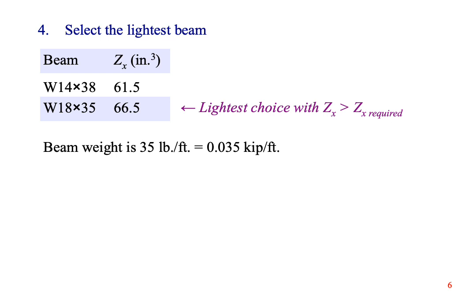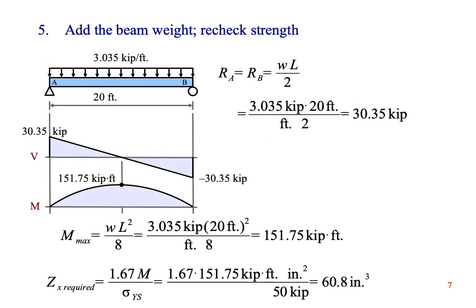This beam weighs 35 pounds per foot, which is the same as 0.035 kips per foot. Now we will add in the weight of the beam and recheck the strength. Since the original loading is a uniform distributed load, we can solve it again by adding the applied load to the beam weight per unit length. 3 kips per foot plus 0.035 kips per foot gives us 3.035 kips per foot. Using the same equations as before, but with slightly different numbers, we get a maximum shear, maximum moment, and required Z that are all a little bit bigger. We have a beam with a Z value of 66.5 inches cubed. We only need 60.8 inches cubed to support the applied load and the weight of the beam. We have more than we need. Therefore, the beam is safe in bending.